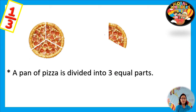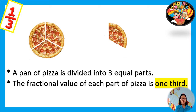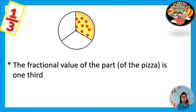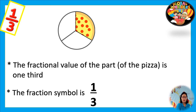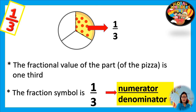Next, we have a pan of pizza divided into three equal parts. The fractional value of each part of pizza is one third. The fraction symbol is one as the numerator and third as the denominator. One third.